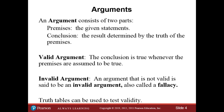An argument consists of two parts. The first part is the premises — there could be one or more premises to a given argument, and these are given statements that may or may not be true, or that are assumed. Then there are conclusions: the result determined by the truth of the premises. So an argument is anything that has a set of premises that leads to a conclusion. Arguments can be valid or invalid. A valid argument is one where the conclusion is true whenever the premises are assumed to be true. An invalid argument contains a fallacy, which is an error in reasoning.